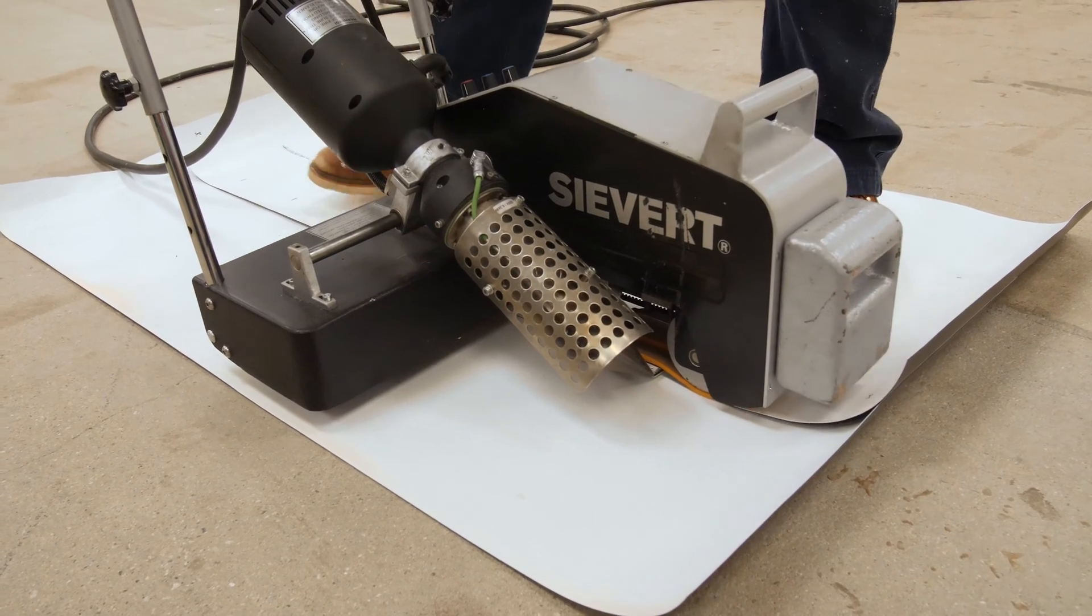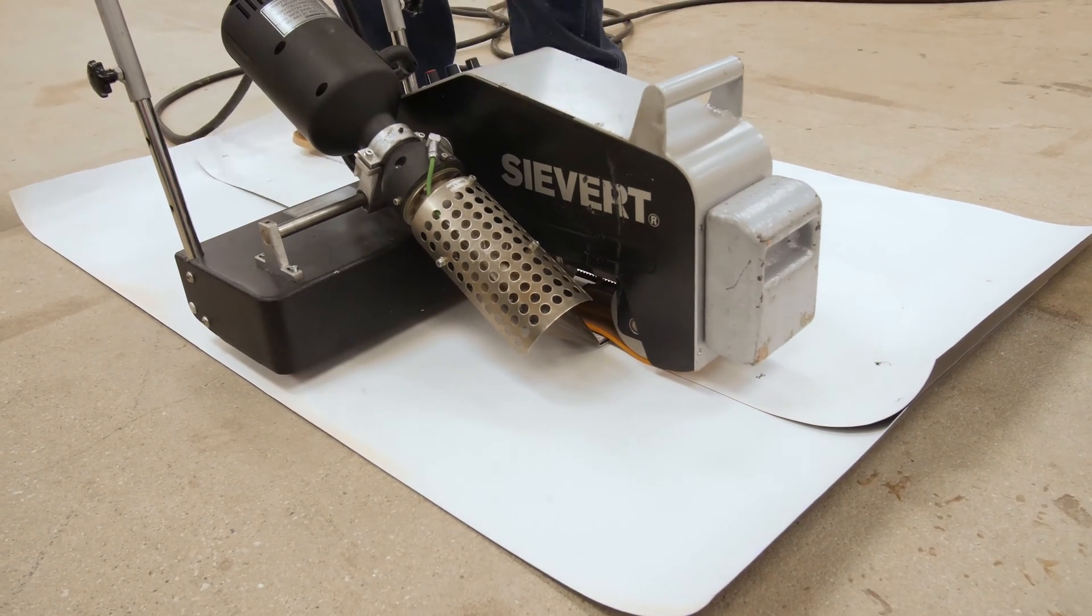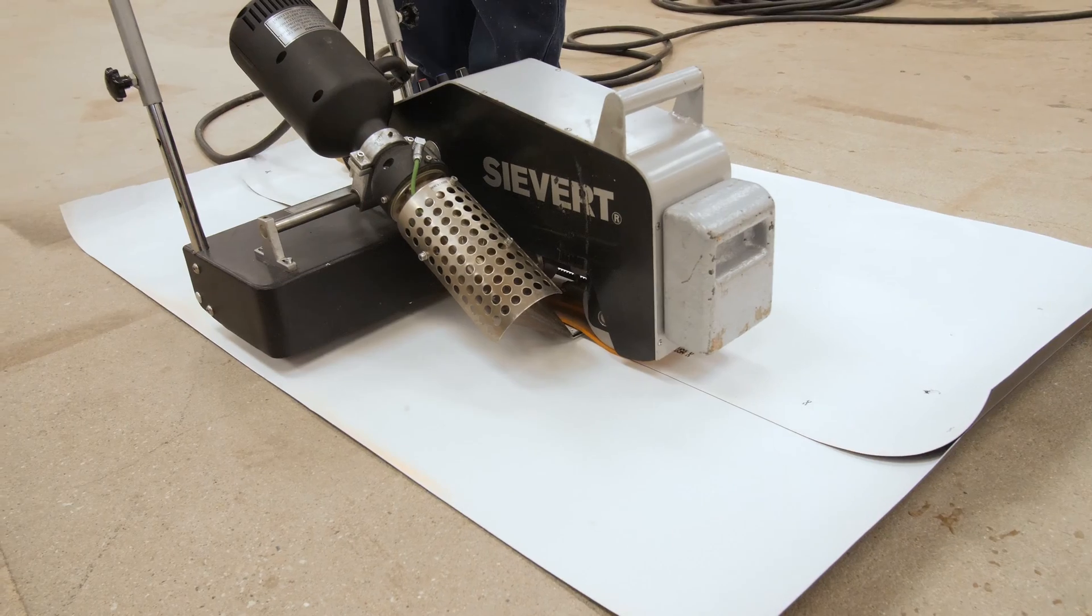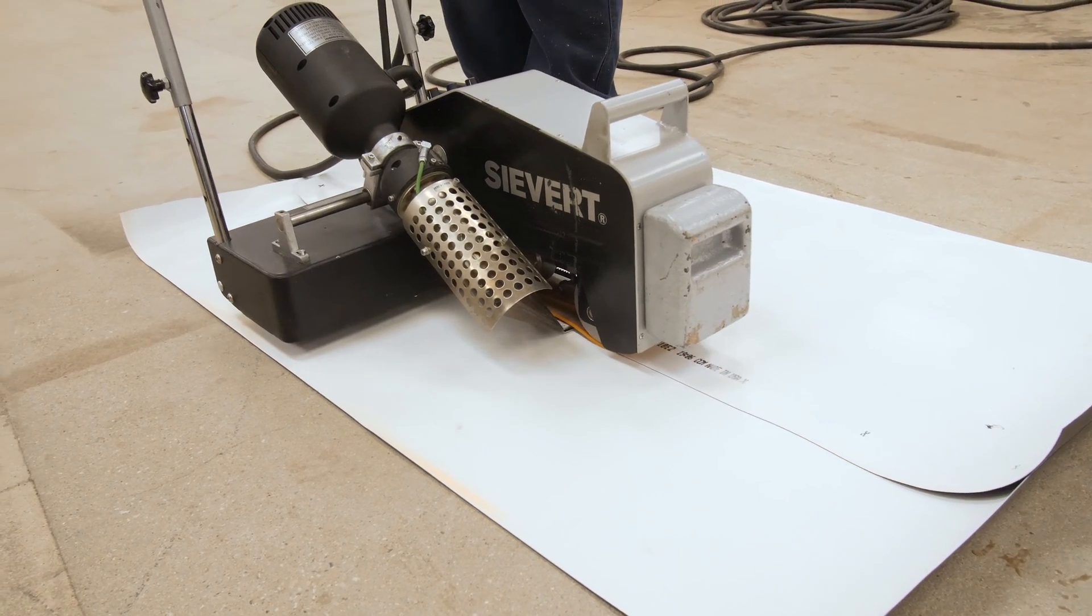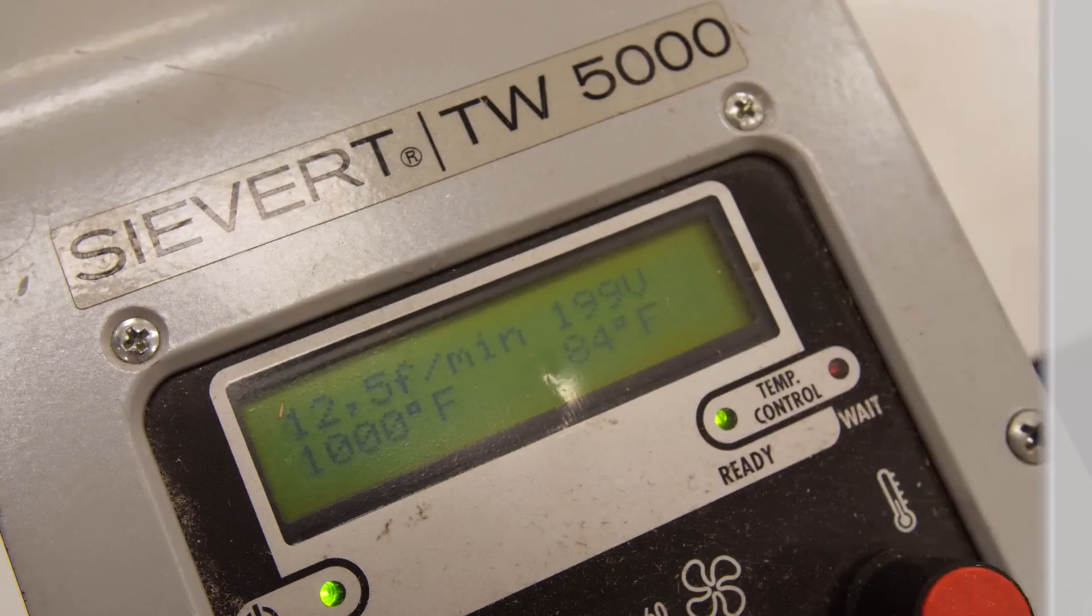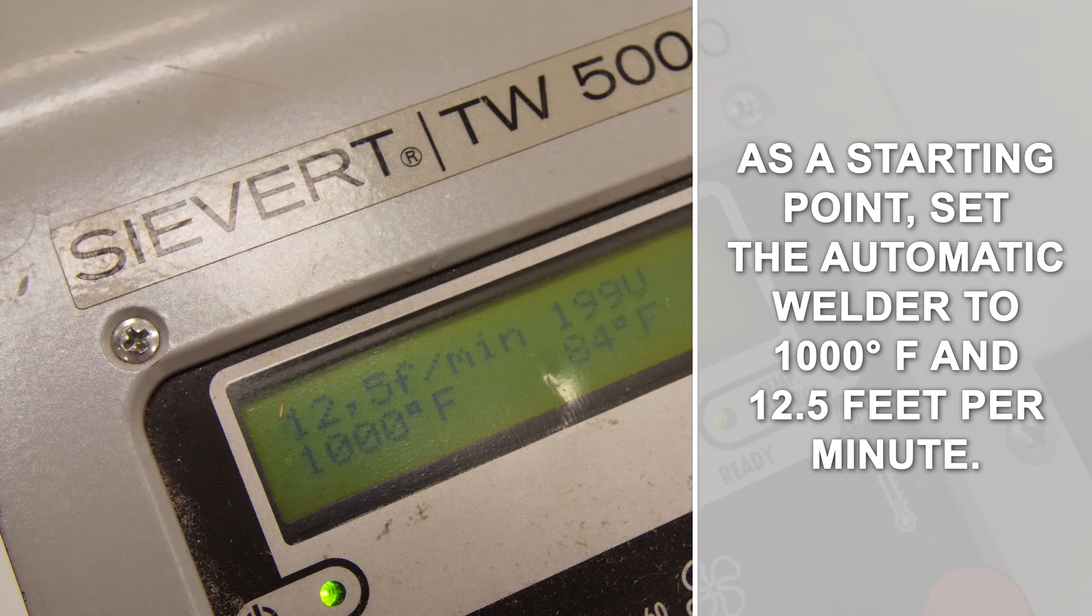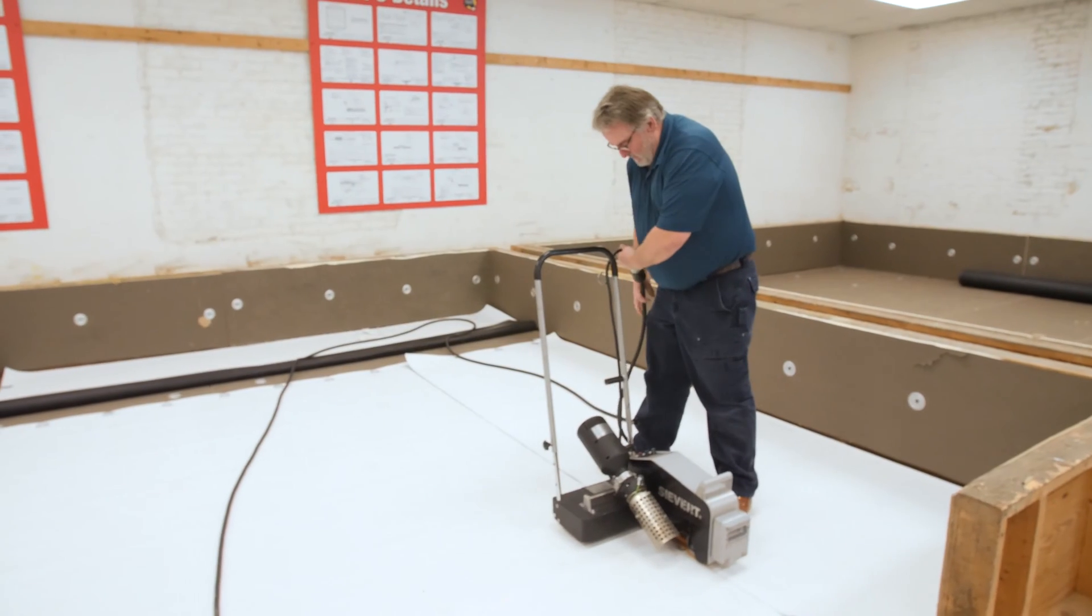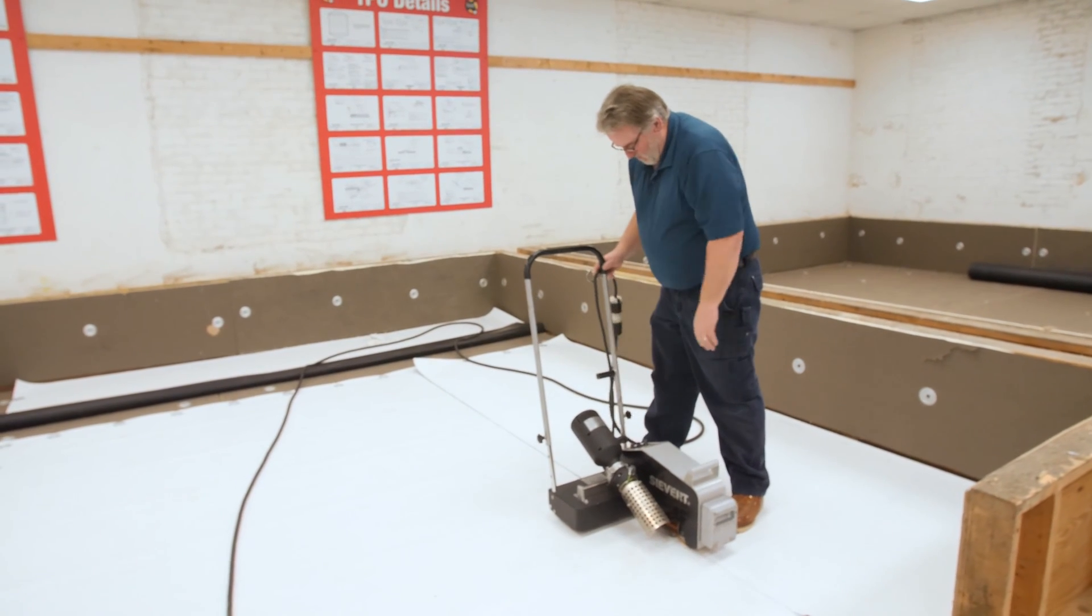Atmospheric conditions will affect how a TPO membrane welds. Always run test welds at the start of each day and any time afterwards following a significant change in temperature. As a starting point, set the automatic welder to 1000 degrees Fahrenheit and 12.5 feet per minute. Adjust the settings as necessary to maximize productivity while maintaining a proper weld.